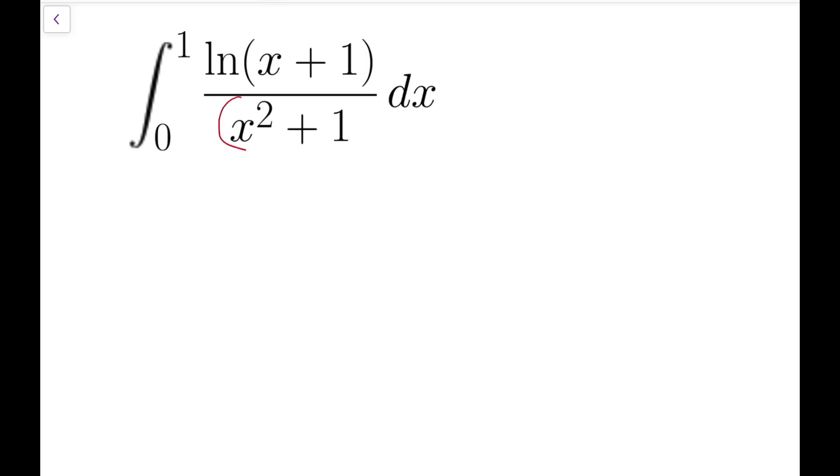When I first saw this integral, this part immediately reminds me of a trigonometric substitution. Recall that tangent squared theta plus 1 is always equal to secant squared theta. So recalling this identity, I will let x equal tangent theta. That means our denominator x squared plus 1 can now be merged into one single term, which is secant squared theta.